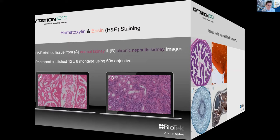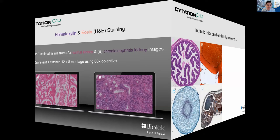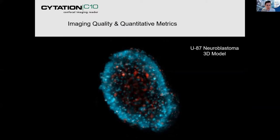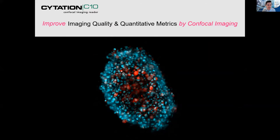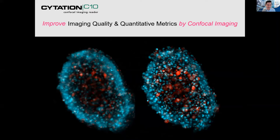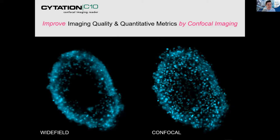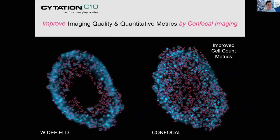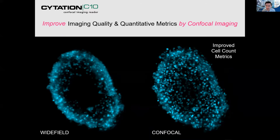Image quality and quantitative measurements are there for wide field, but when it comes to confocal imaging, you can see the improvement. On the left with wide field, you can see the contour and contour mask over the sample, but on the right with confocal, you see improved cellular metrics. The advantages of confocal optics include elimination of out-of-focus light and Z-stacking, enabling improved quantification such as accurate cell counting for spheroid biology.